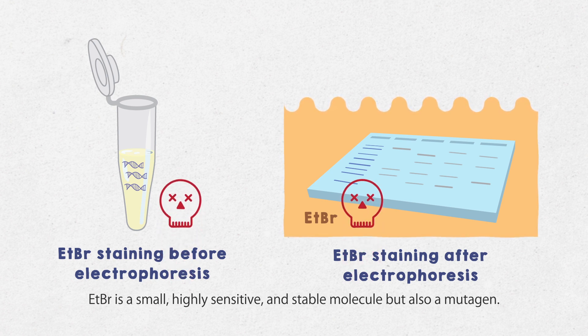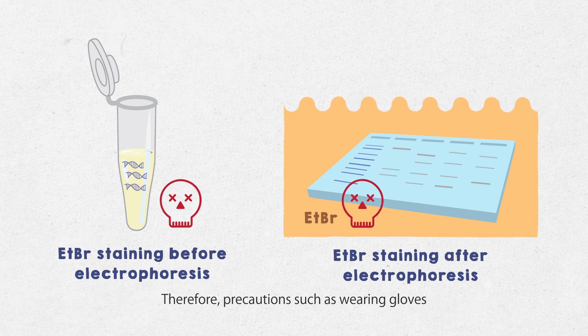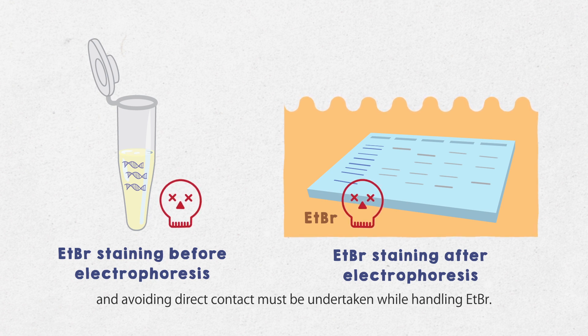EtBr is a small, highly sensitive and stable molecule but also a mutagen. Therefore, precautions such as wearing gloves and avoiding direct contact must be undertaken while handling EtBr.